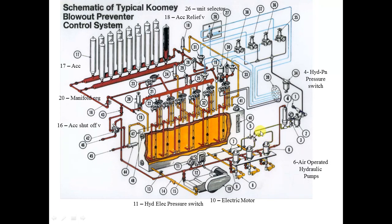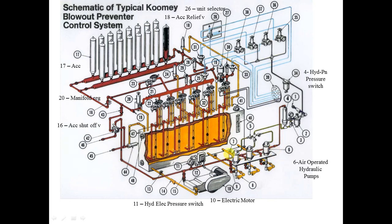The air pump takes hydraulic oil from the reservoir and pumps it to increase the accumulator pressure. This is the first power supply to the Koomey unit. Number seven is called the suction shutoff valve — it takes the hydraulic oil from the reservoir and gives it to the air pump to increase accumulator pressure.